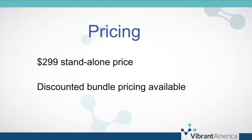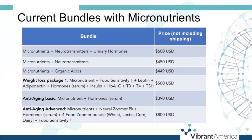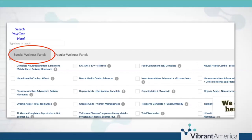You can order the Vibrant Micronutrient test as a standalone test for $2.99. However, there is additional discounted bundle pricing available. These are the current bundles that already include micronutrients with bundled discounted pricing. If you're interested in ordering those together, check in the portal — specifically in the special wellness bundle portion of the ordering portal, which appears before you get to the individual tests.